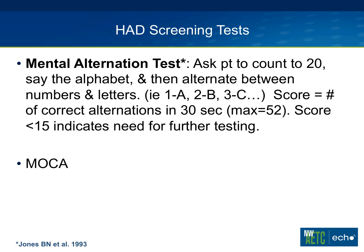The Mental Alternation Test asks the patient to alternate between numbers and letters — 1A, 2B, 3C — and the score is the number of correct alternations in 30 seconds. Any score under 15 indicates the need for further testing. The MoCA is also useful; it tests visual-spatial and executive functioning and is considered better than the Mini Mental Status Exam, though it doesn't test psychomotor slowing as much.